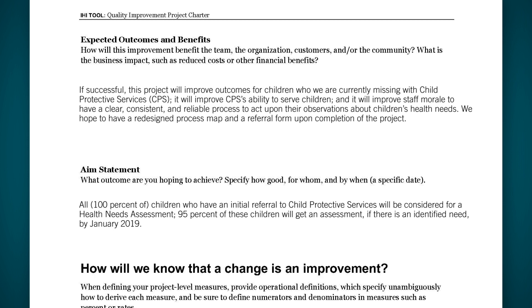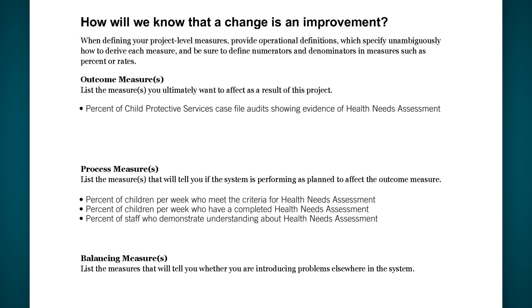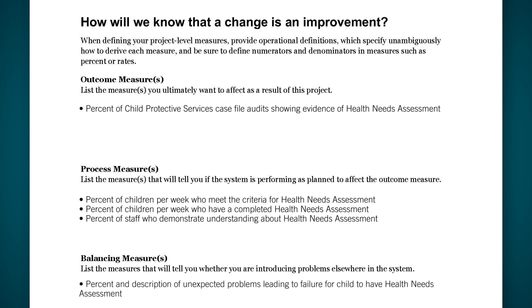Moving on to the next section: how will we know that a change is an improvement? This part is all about measures. You should usually have one to two outcome measures — the measure or measures you are ultimately trying to move. Three to five process measures — measures for the core processes or changes that will influence your outcome measure. And one to two balancing measures — measures to help you monitor other parts of the system that could be affected by your change.